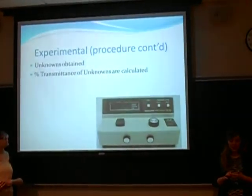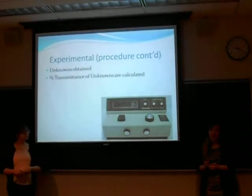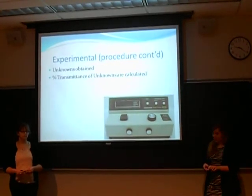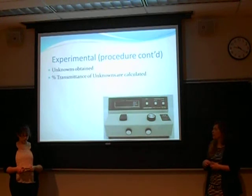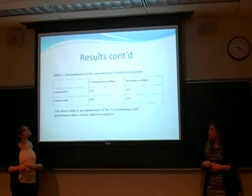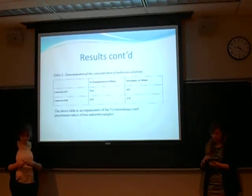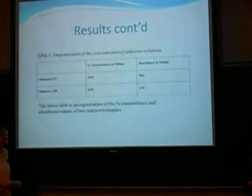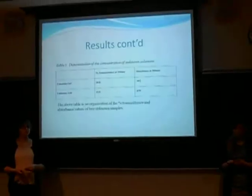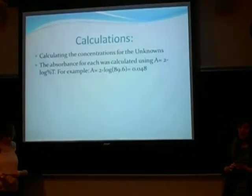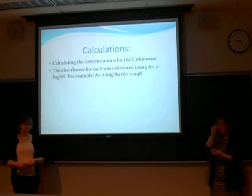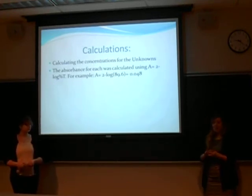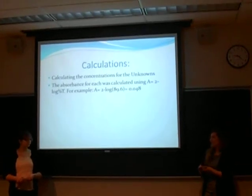Continuing with experimentation, one test tube of the cobalt chloride solution at an unknown concentration was obtained for each group member. The percent transmittance and absorbance values for each unknown were then recorded using the spectrophotometer at our determined maximum wavelength. Table five shows the unknown solutions' percent transmittance and absorbance at the maximum wavelength of 500 nanometers. To calculate the concentrations of the unknown solutions, the equation A equals E times L times C plus B was used.